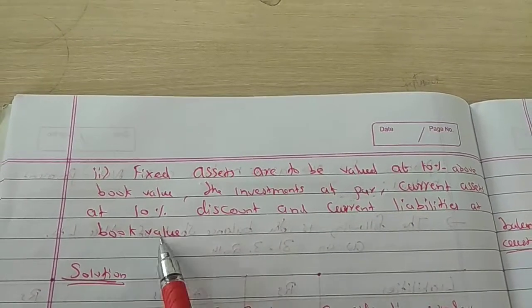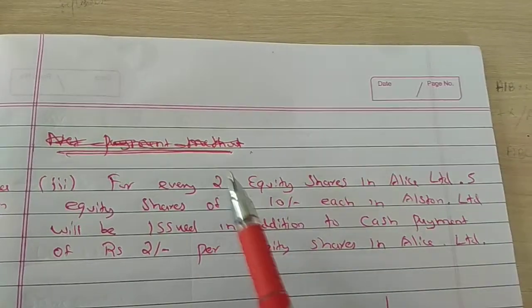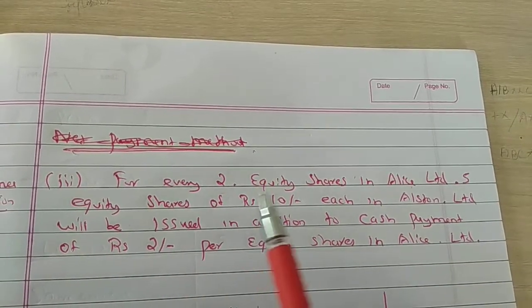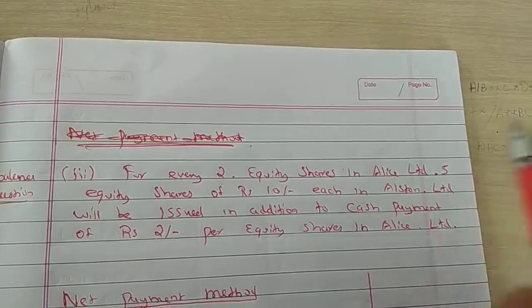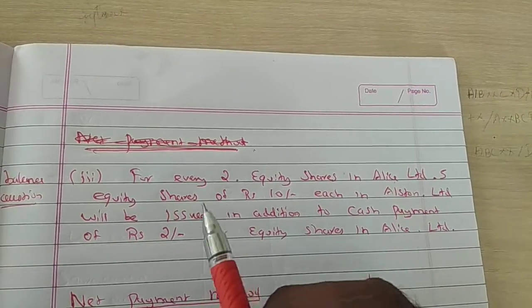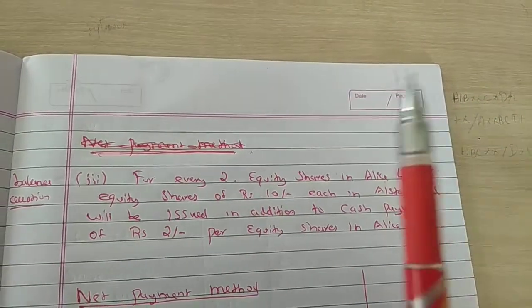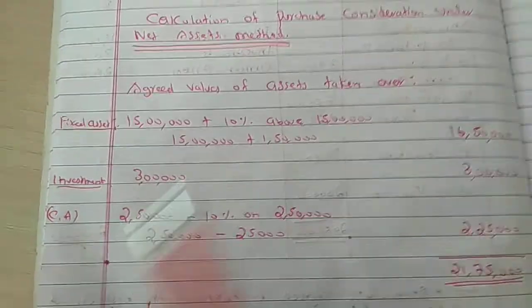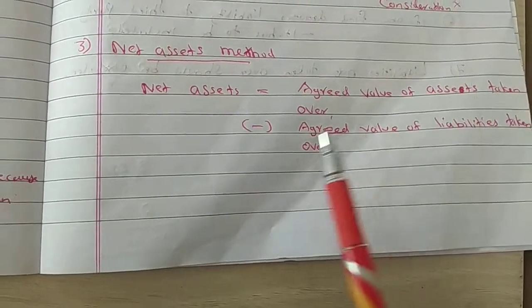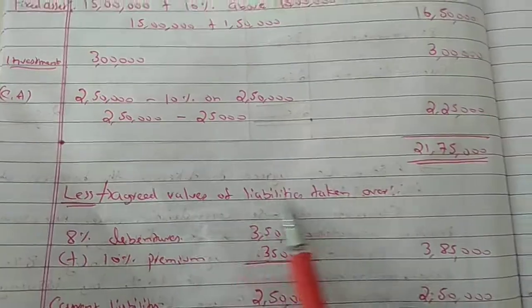Third adjustment: For every 2 equity shares in Alice Limited, 5 equity shares of Rs. 10 each in Alston Limited will be issued, in addition to a cash payment of Rs. 2 per equity share in Alice Limited. So for every 2 shares, 5 equity shares are received plus Rs. 2 cash per equity share. Now let's calculate using the Net Asset method first. The formula is: Agreed value of assets taken over minus agreed value of liabilities taken over.